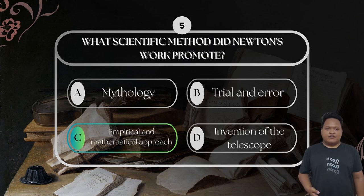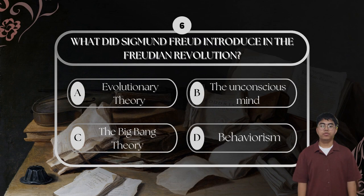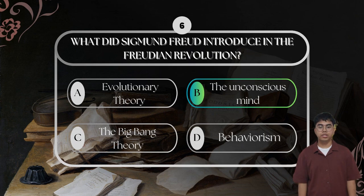For question number six: what is Sigmund Freud's role in the psychological revolution? The correct answer is the unconscious mind. Freud proved that human behavior is influenced by unconscious thoughts and desires. This idea transformed psychology, offering a deeper understanding of mental processes, behavior, and emotional conflicts. It also laid the foundation for psychoanalysis.